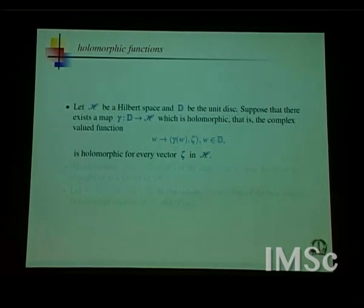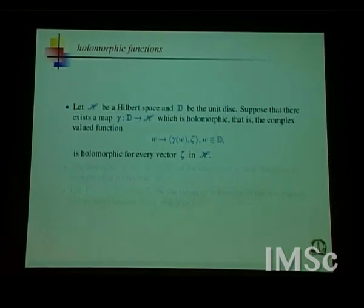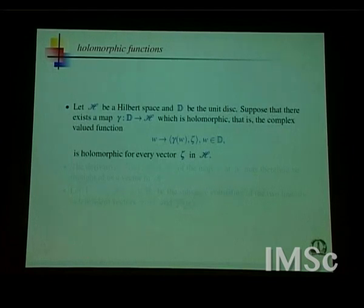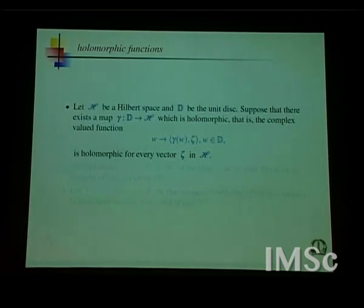We begin with some very simple ideas which actually go back to the days when I was doing my PhD. There were some problems there that were left unresolved, and I am going to report what we have been able to do 30 odd years from those days. We begin with a holomorphic map — to begin with, only on a unit disk, a one-dimensional situation — but I will tell you what one can do in the multivariate case later on.